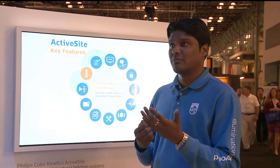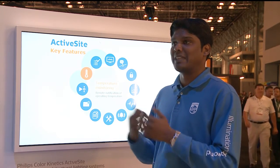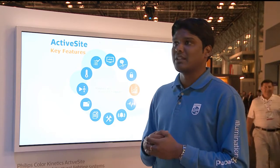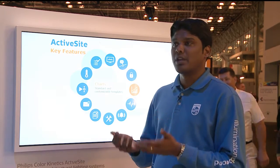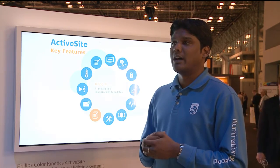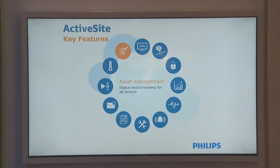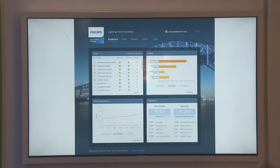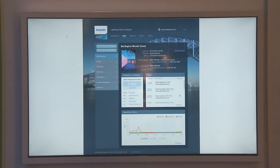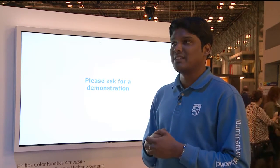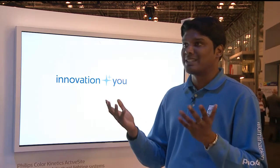That's where Philips heard all these concerns from customers and came up with ActiveSight. ActiveSight is a system that allows us to remotely monitor, maintain, and manage Philips Color Kinetics installations worldwide. ActiveSight is a cloud-hosted software-as-a-service solution, which means customers can access their installations from wherever they are — on the go, in their office, at home, or even from a plane — because all you need is a computer and internet. You get onto a browser and you can manage all your installations from one dashboard.